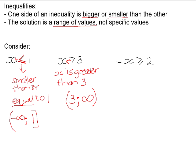Now looking at the last example: negative x is greater than or equal to 2. Two different people might approach this in two different ways. One person might say: keep the inequality sign facing the same direction, add x to both sides, and subtract 2 from both sides — in other words, swap the x and the 2 around. We can do this because an inequality sign behaves like an equal sign in that way, giving us positive x on the right and negative 2 on the left.